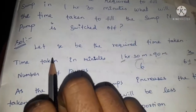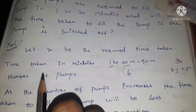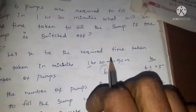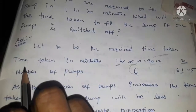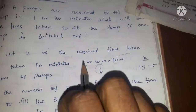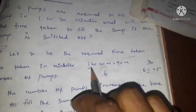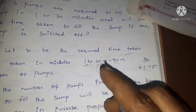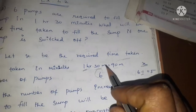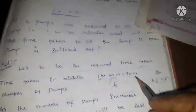We are going to the solution. Let x be the required time in minutes. 1 hour and 30 minutes equals 60 minutes plus 30 minutes, which is 90 minutes.